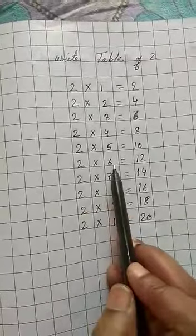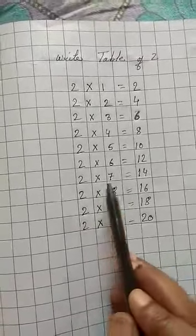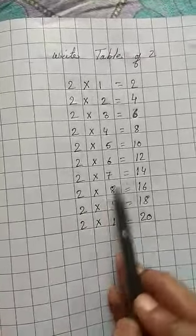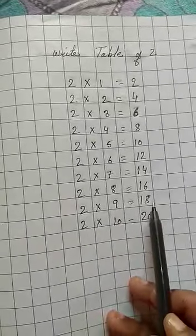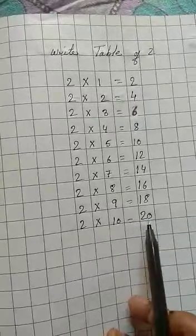2 sixes are 12, 2 sevens are 14, 2 eights are 16, 2 nines are 18, 2 tens are 20.